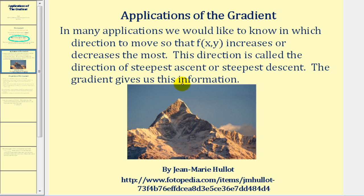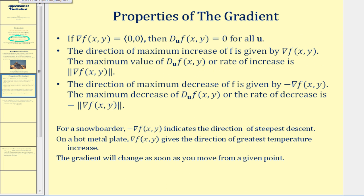The gradient actually gives us this information. Here are some properties of the gradient. If the gradient of f of x, y is equal to the zero vector, then the directional derivative of f of x, y will also equal zero for all unit vectors. For this video we'll focus on the next two properties. The direction of maximum increase of f is given by the gradient of f of x, y.